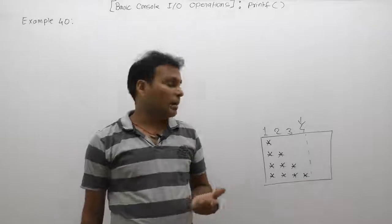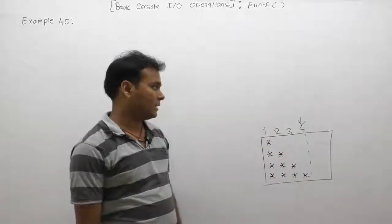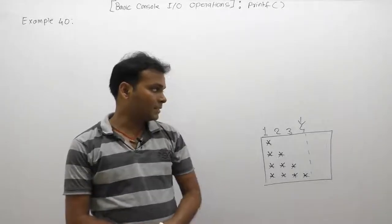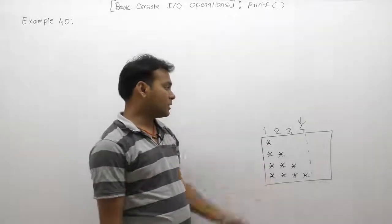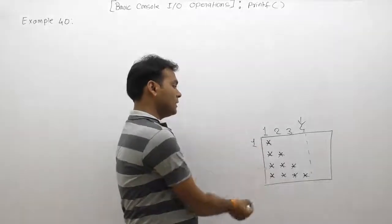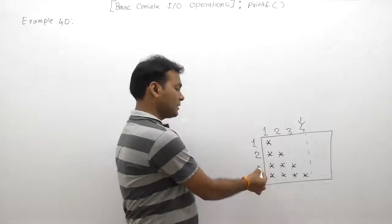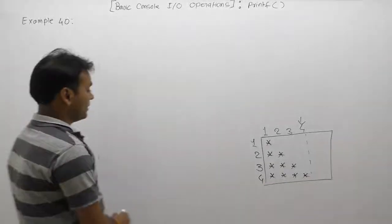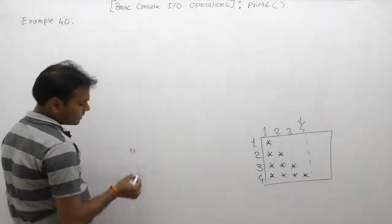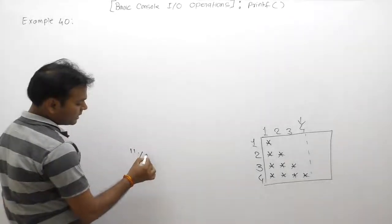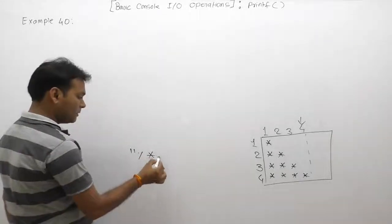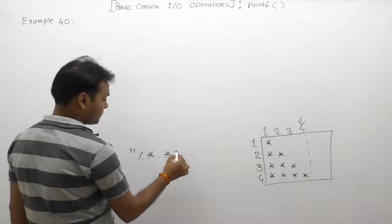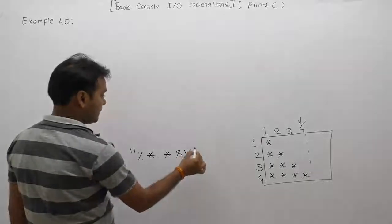We can fix the width value as four every time, or there is no need of supplying the bit value. Next case: how many stars are required? In the first case, only one star is required. In the second case, two stars are required. In the third case, three stars. In line four, four stars are required. According to printf, when using normal syntax — percent, bits — in place of bits we are using star, and in place of the character we are also using star.